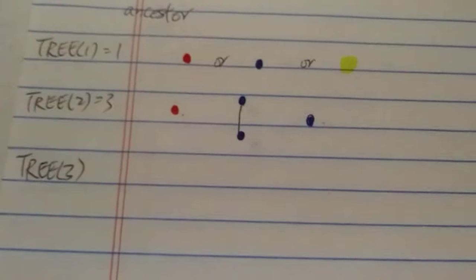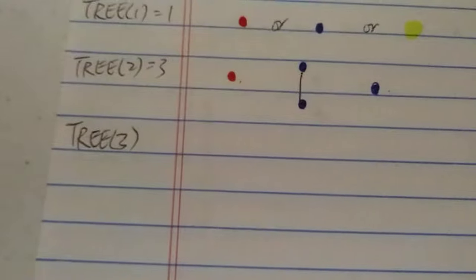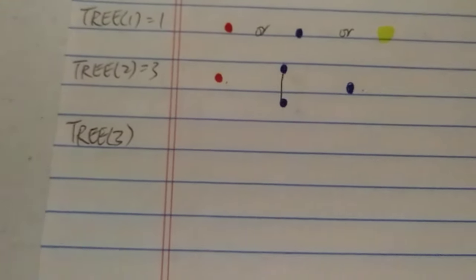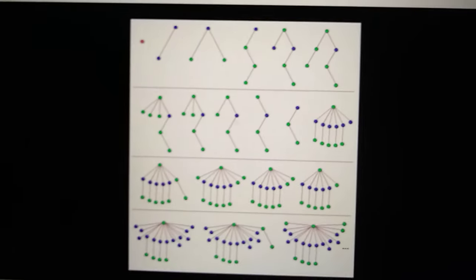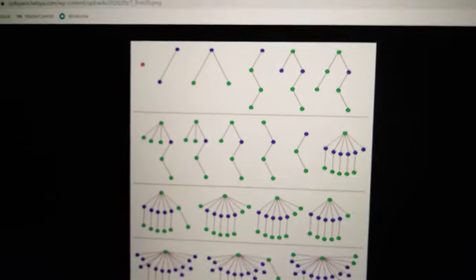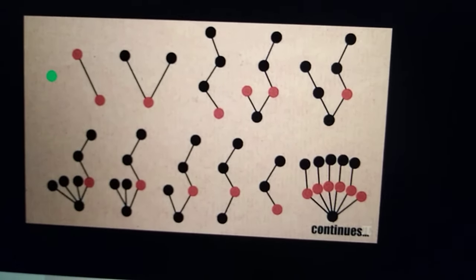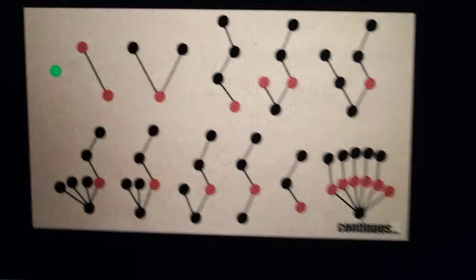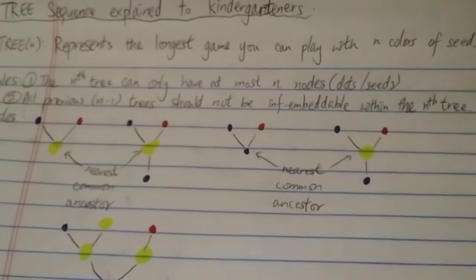Hopefully you get it now. As for TREE(3), I'm not going to tell you the value — it's very very big, much much bigger than even Graham's number. You can look it up online. I showed a couple of example starting sequences for TREE(3) and verified the previous tree is not contained in the next for each. Anyway, this is my attempt at explaining the TREE sequence to kindergartners. Thanks for watching and have a nice day!